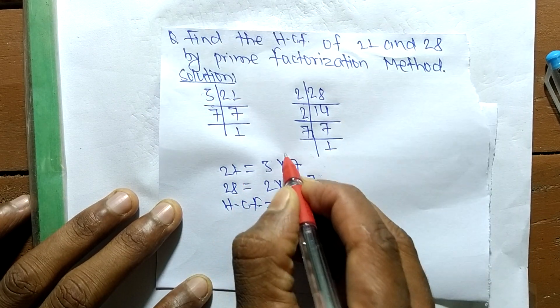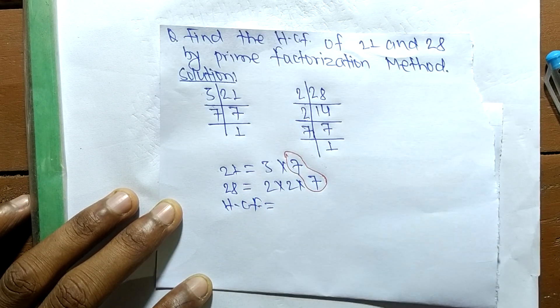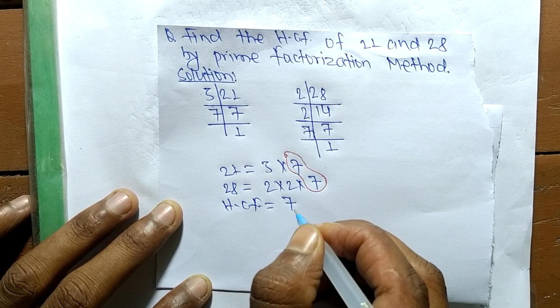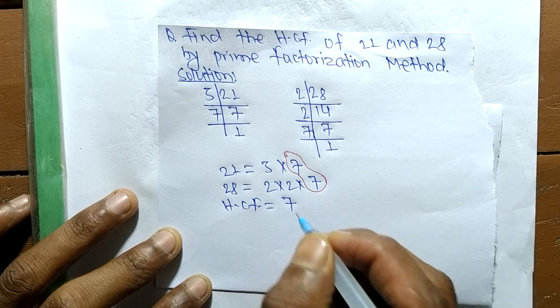So the common factor here is 7, so the HCF is equal to 7. So this is it for today, and thanks for watching.